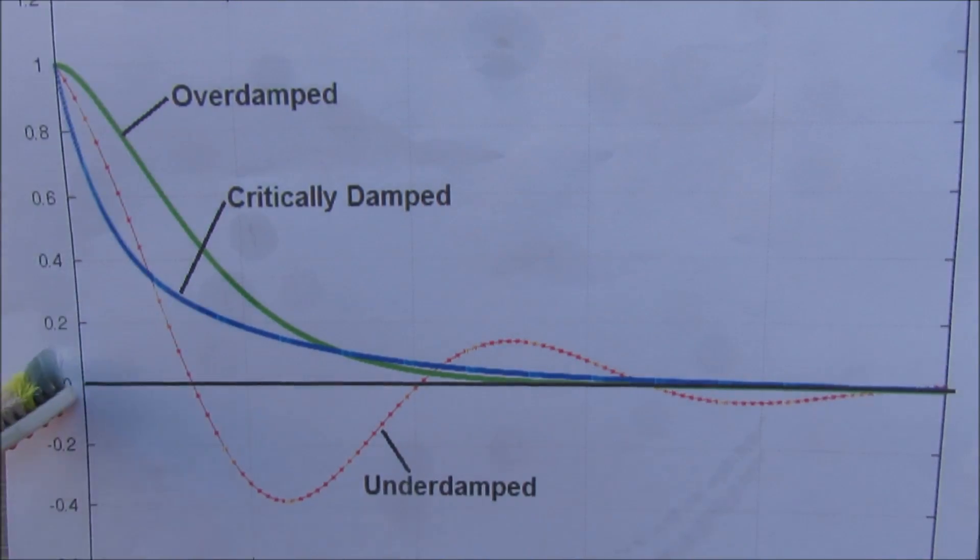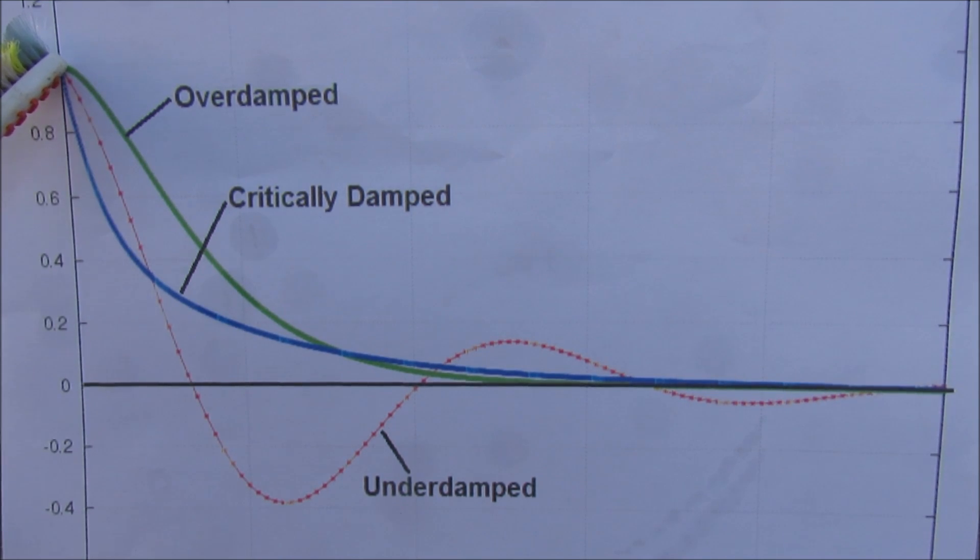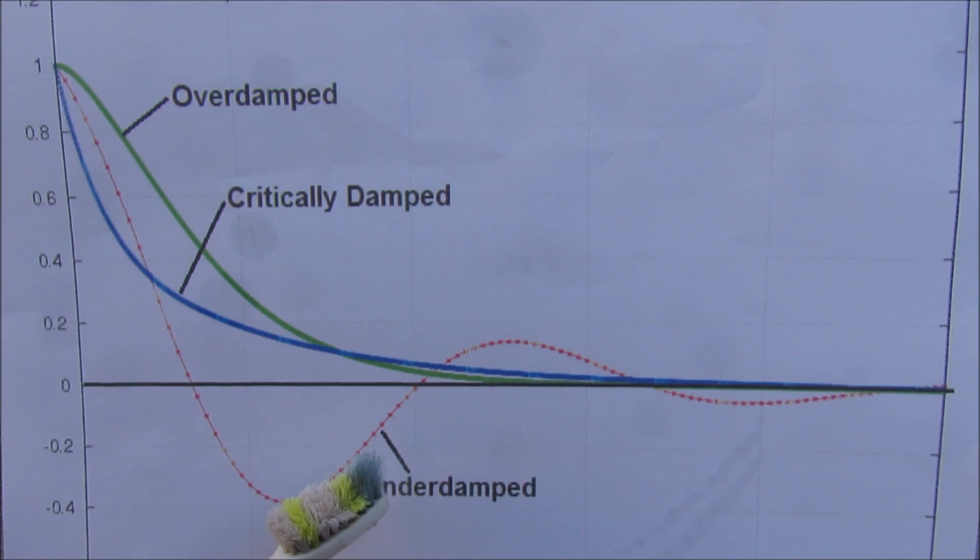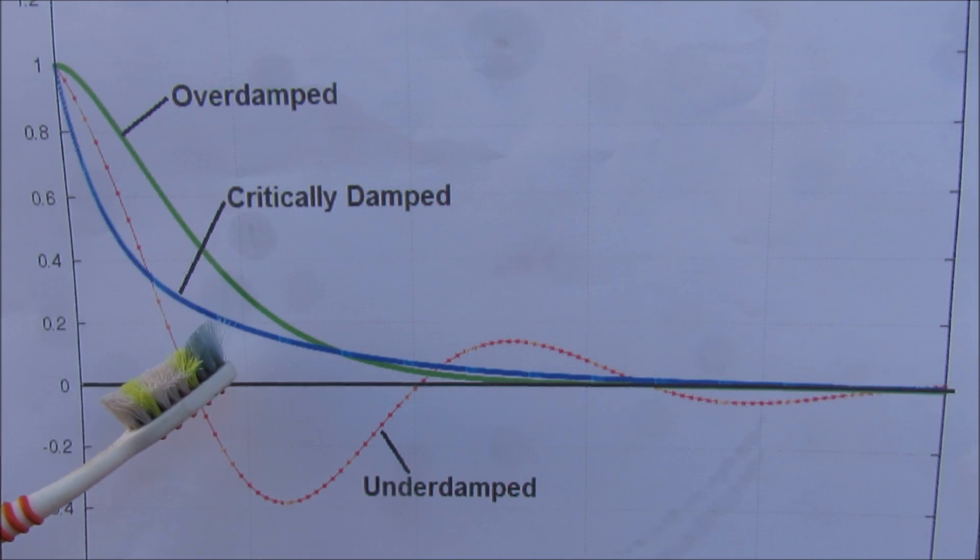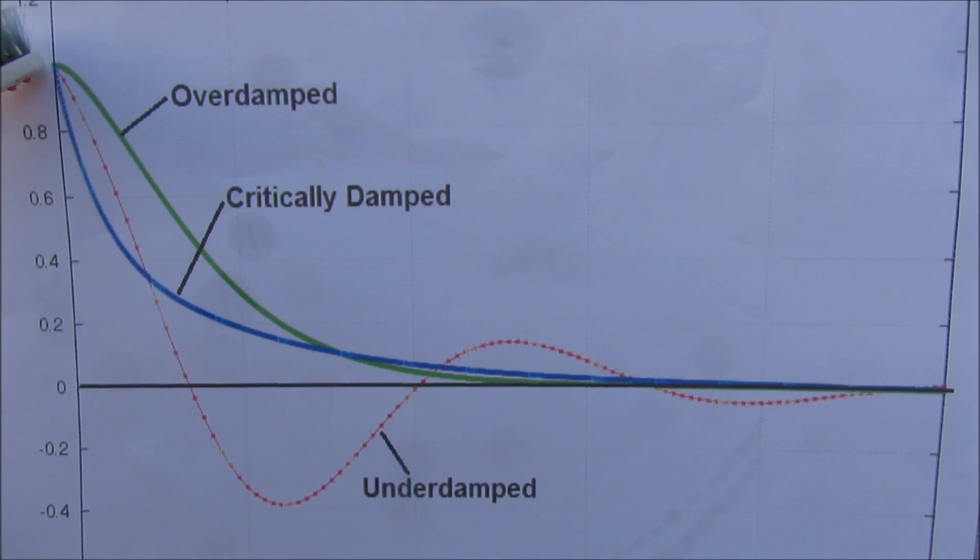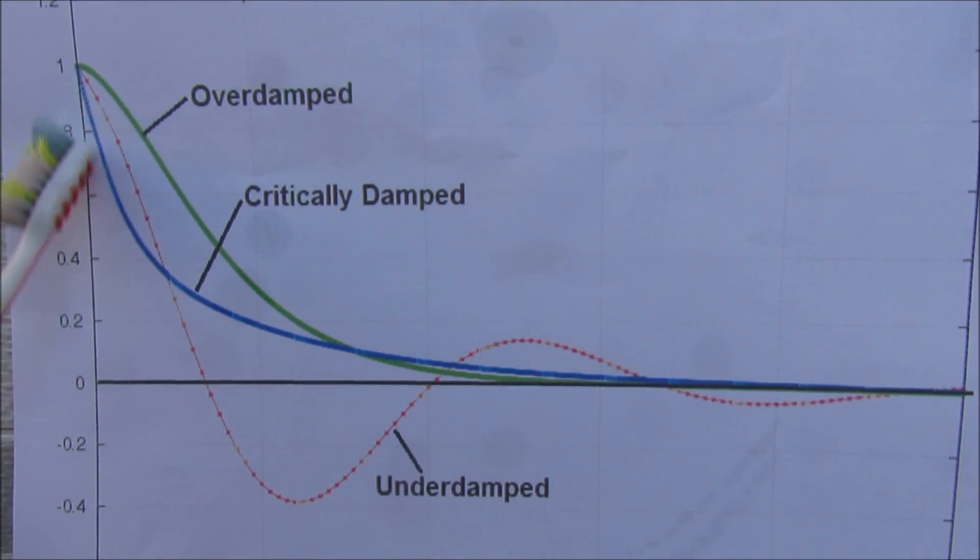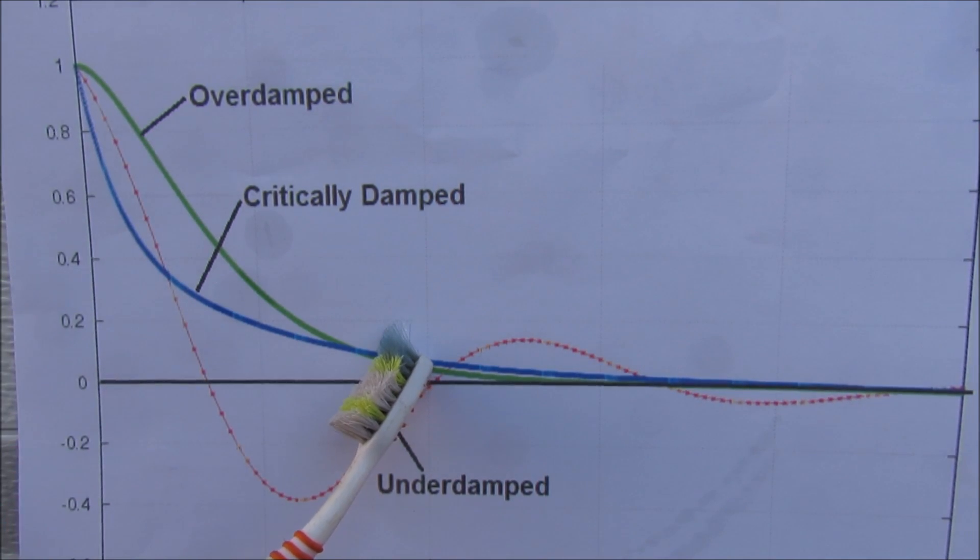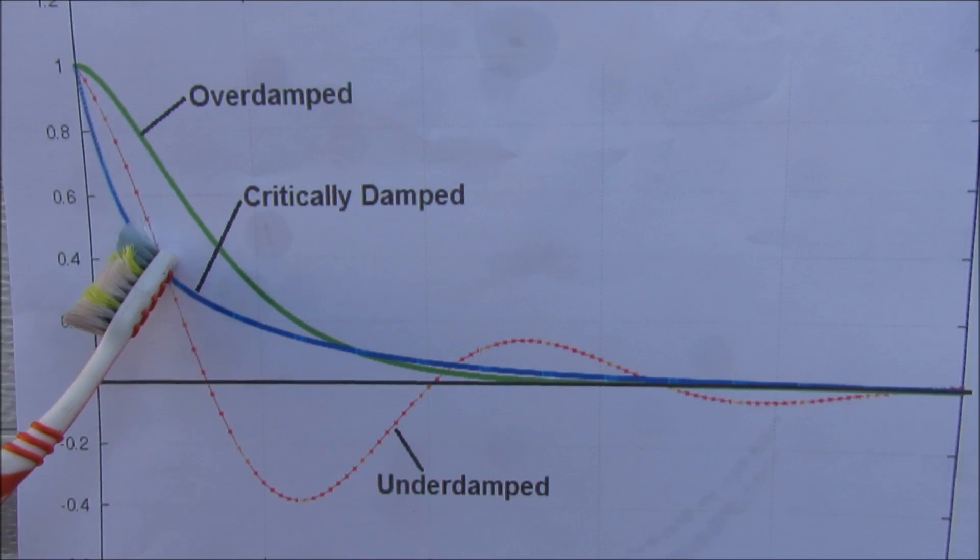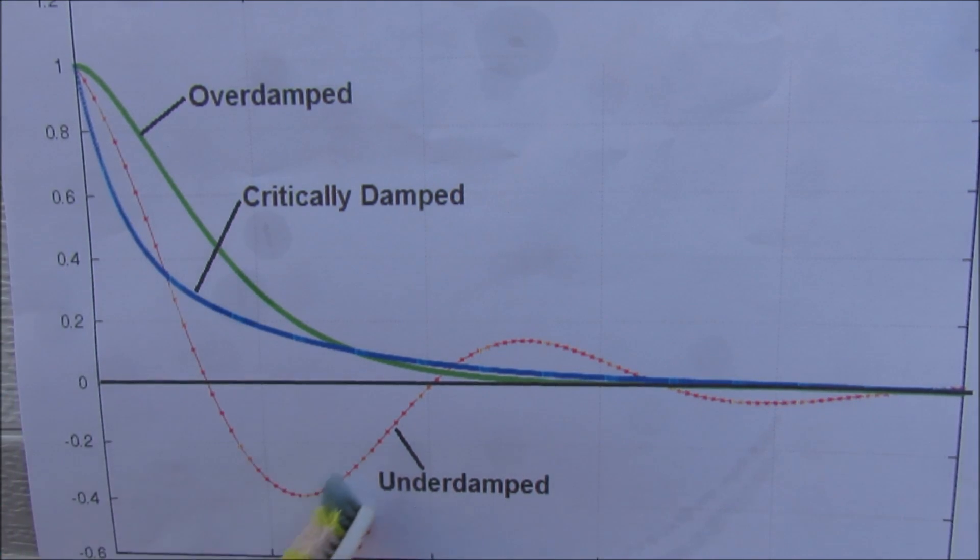If you graph the time versus displacement when your wheel hits a bump in an under-damped system, meaning your shock absorber isn't working, it's going to cause this bounce you see in the red line. If your shock absorber is over-damped, it's going to take a while before it gets back to its ideal position. This blue line represents it being critically damped, where your wheel comes down as fast as possible without overshooting and bouncing.